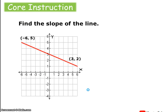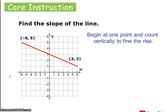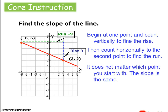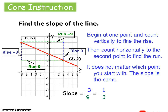Find the slope of the line given. I'll identify two points on the grid lines: (3, 2) and (−6, 5). Starting at (3, 2), I count vertically to find the rise — one, two, three units up. Then I count horizontally to the second point to find the run. Since I'm going to the left, that's a negative run. If I'd started at (−6, 5) instead, I'd go down negative three and run positive nine, still giving negative three over nine, which is negative one-third. The starting point doesn't matter — slope is the same either way.